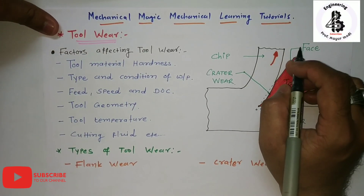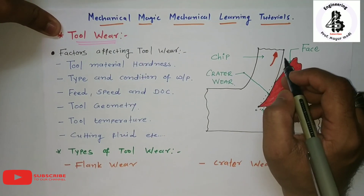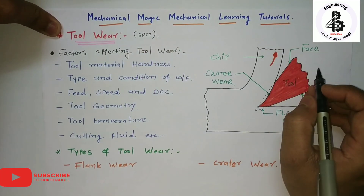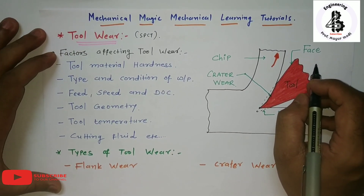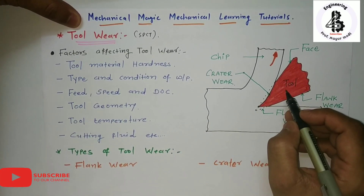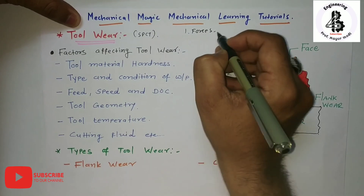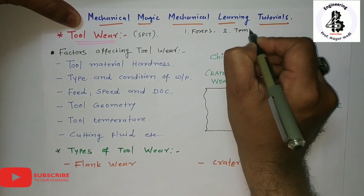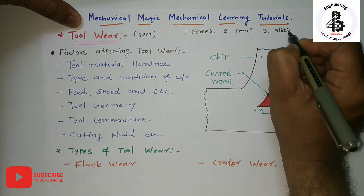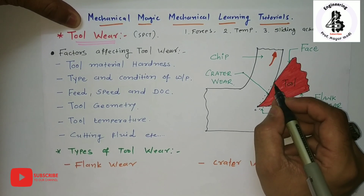Welcome to my YouTube channel Mechanical Magic - Mechanical Learning Tutorials. Today I am discussing the cutting tool materials, specifically for the single point cutting tool. In the metal machining process, the tool is subjected to three different factors: first, forces; second, temperature; and third, sliding action relative between the tool and the workpiece.